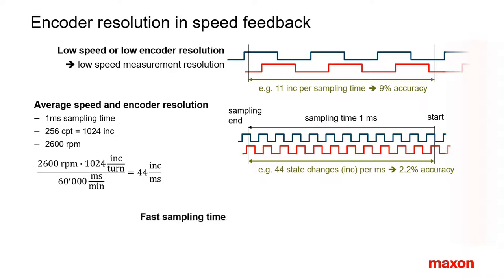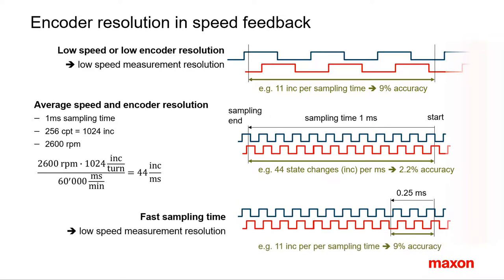A similar effect is obtained by faster sampling. There is a tendency towards faster sampling times in modern controllers. We have seen on the previous slide that for narrow speed tolerances, faster sampling is a good thing to do. However, for the same speed and encoder resolution, there are fewer increments and the resulting speed resolution will be lower.